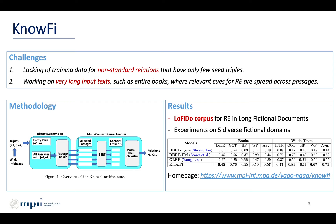There are two main challenges when working on knowledge extraction in fictional domains: lacking training data for non-standard relations and working on very long input texts, such as entire books. To overcome these challenges, we propose a method called KnowFi.